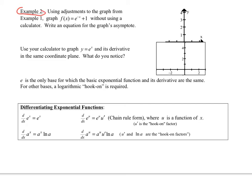Example 2. Using adjustments, we want to graph f(x) = e^(-x) + 1. Well, e^(-x), if we graph this, we're going to get a strictly decreasing function like so.